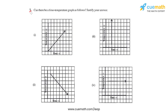In question number seven of this first exercise, we have been given a set of line graphs and we have to find out which of the following will represent a time-temperature graph. We will also have to give justification for our answer. Now let us take the first graph of the lot.